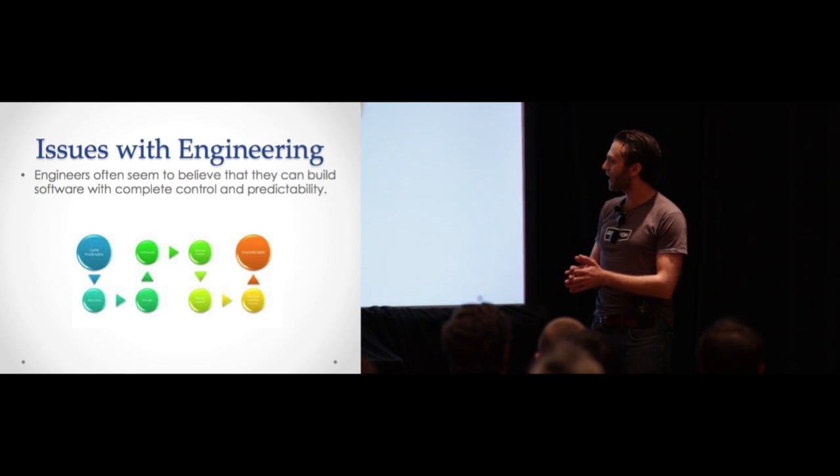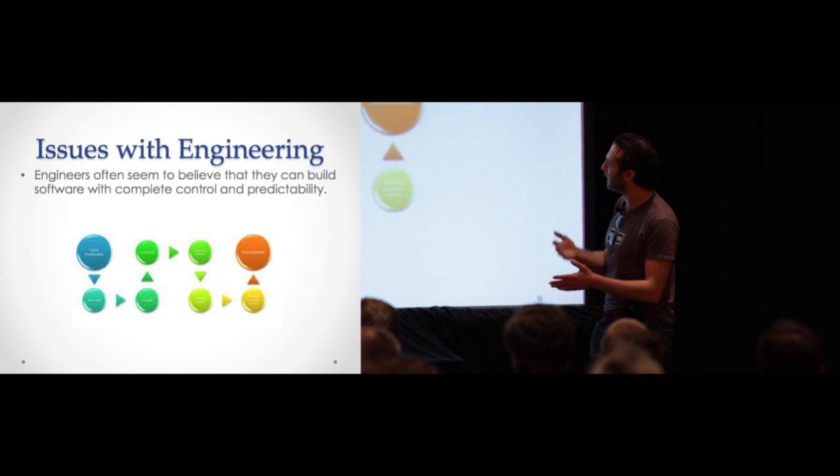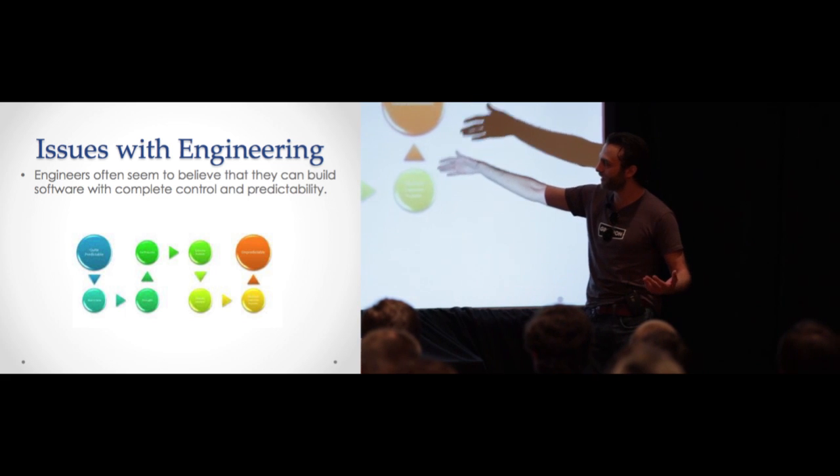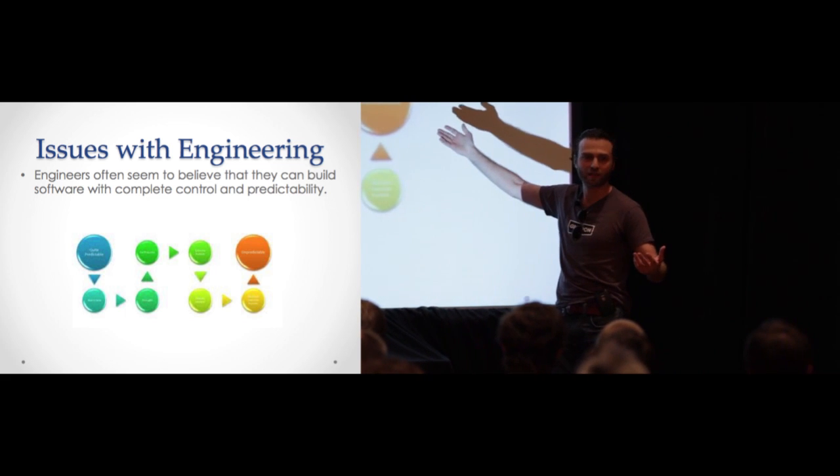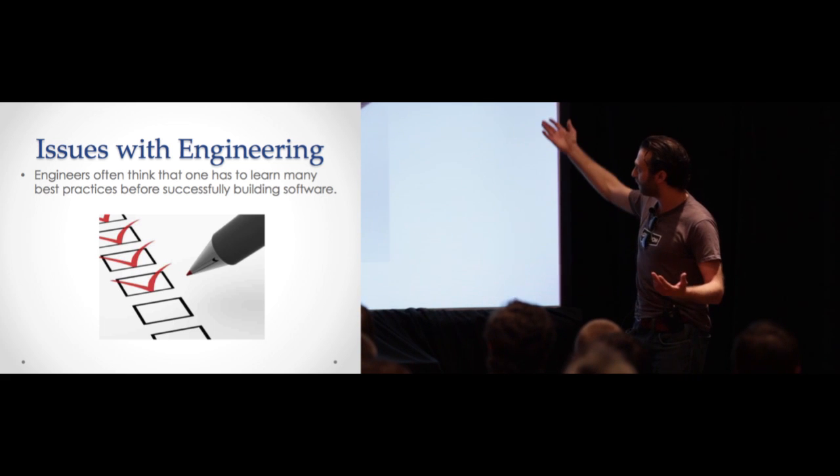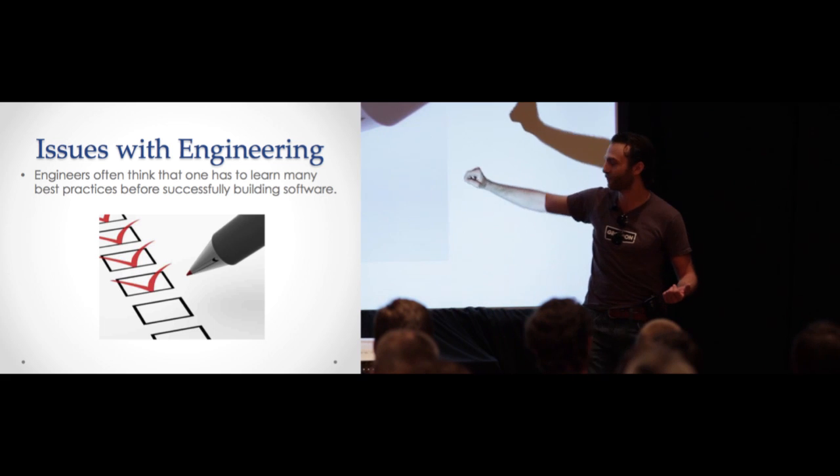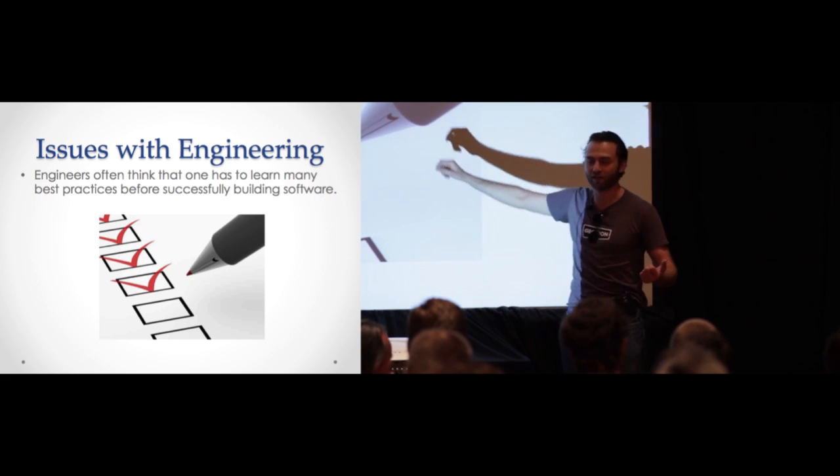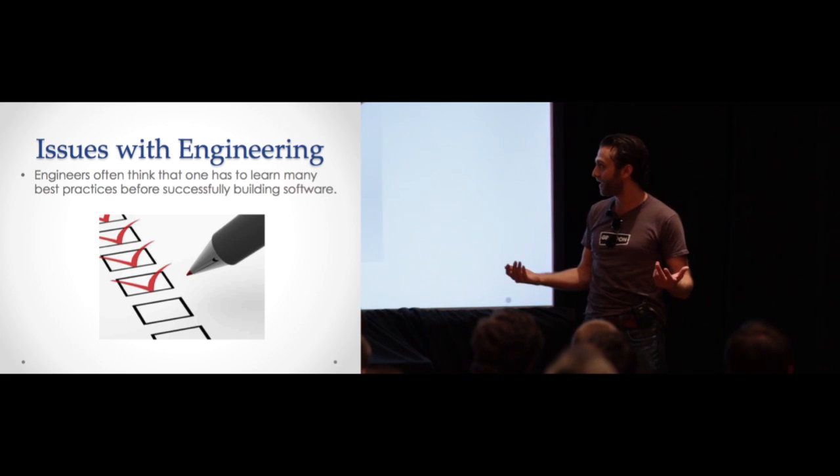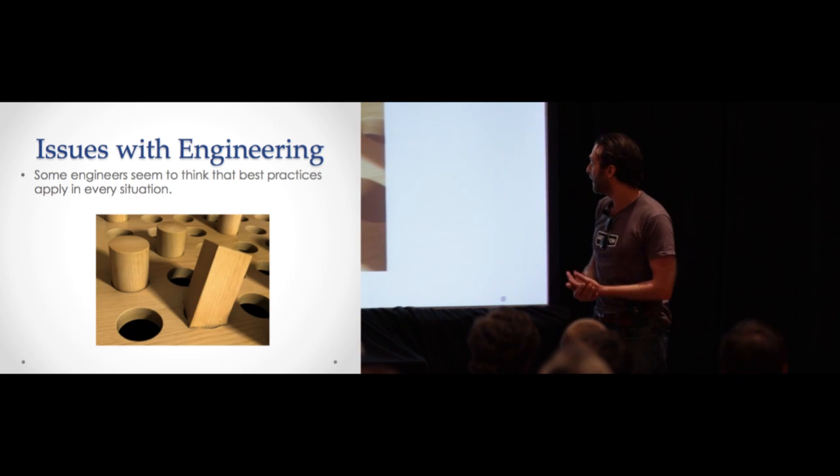Issues that came out with engineering is that a lot of engineers seem to believe, it's just a bad habit, that things can be completely controlled, where A leads to B, leads to C, leads to D, and then you produce success. But it doesn't work that way. They also believe that you have to learn a lot of best practices, check design patterns, software architecture, requirements engineering, before you can succeed, when a lot of people have succeeded in the field with standard software craftsmanship practices or even disciplines.